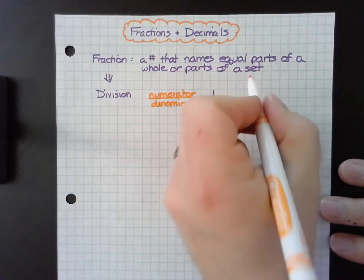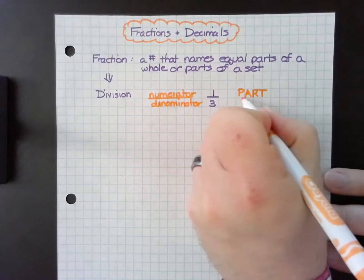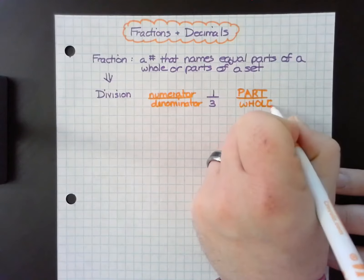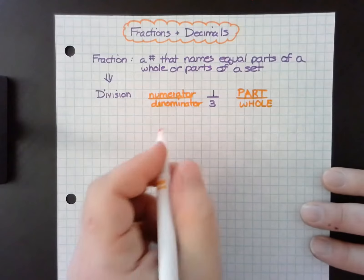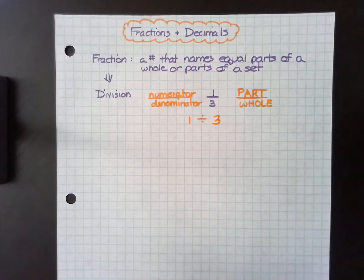And so we consider this parts of a whole, and we say that this is one divided by three. So it's really important to understand the context of a word problem. Let's take a look at an example.